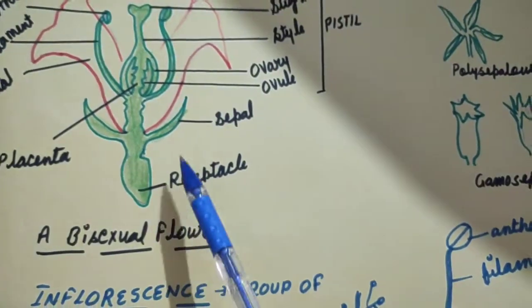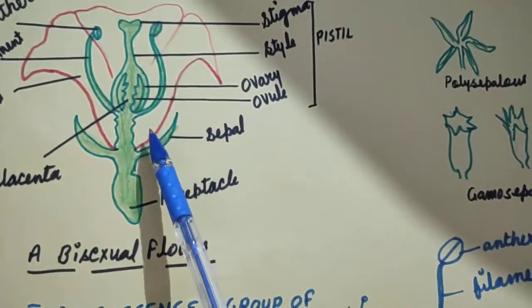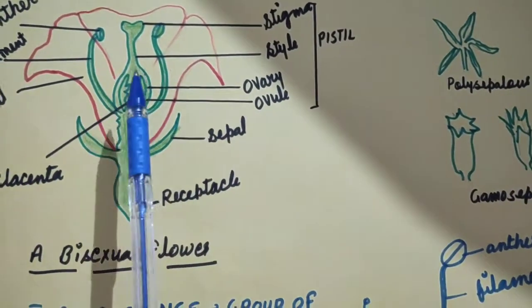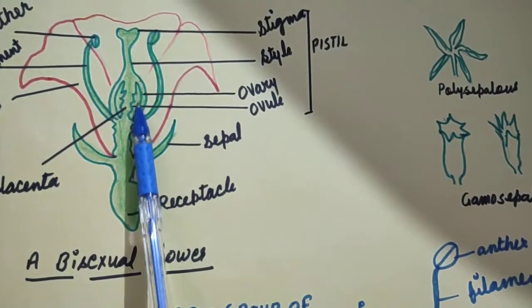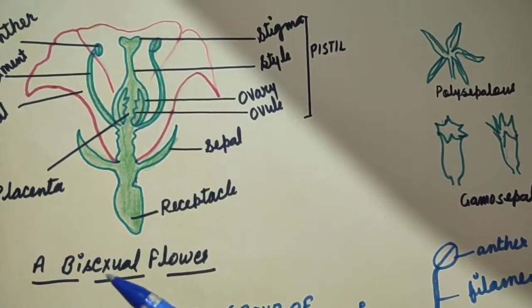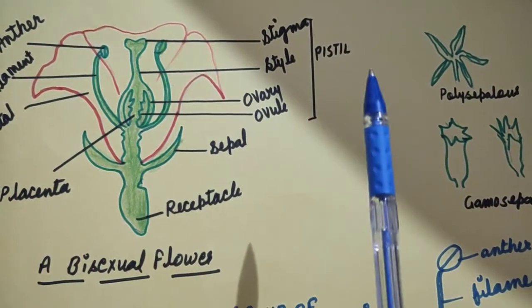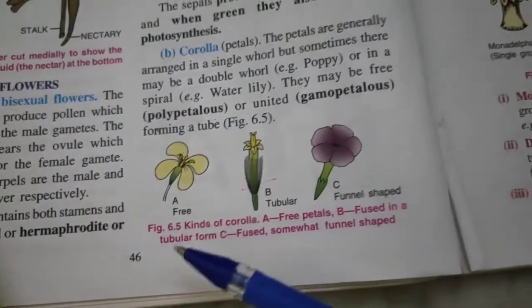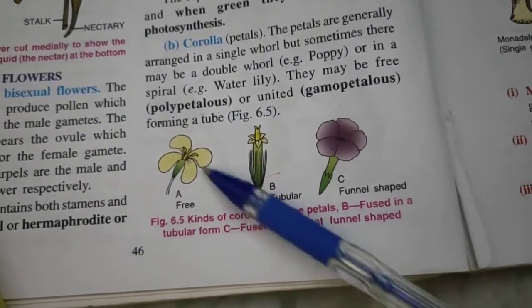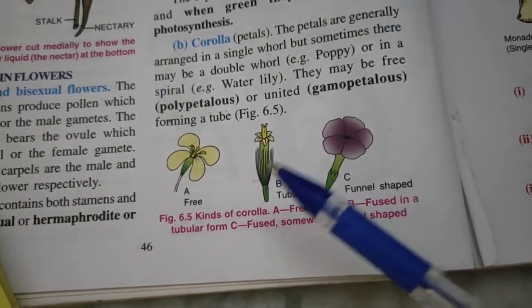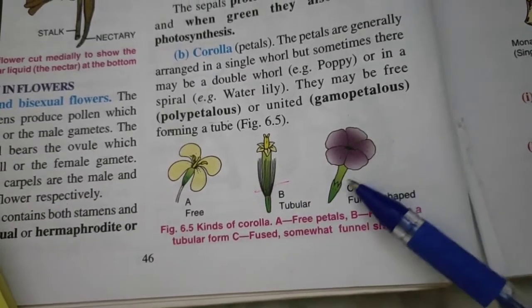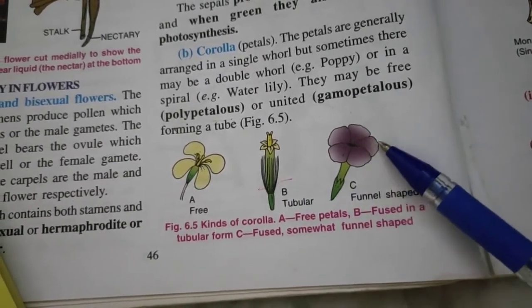Next structure is corolla, petals. Collectively, petals are called corolla. And they are in single whorl. But sometimes they may be a double whorl, as in poppy, or sometimes they are spiral. You can see here. Free petals. Then fused in a tubular form. And they also fused, funnel shaped.